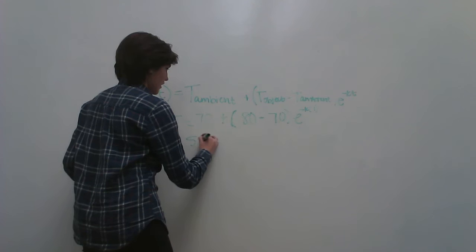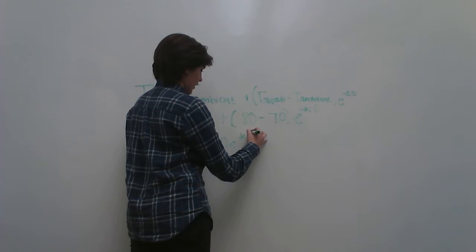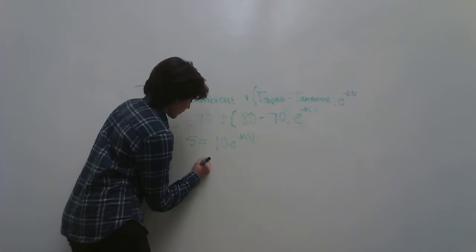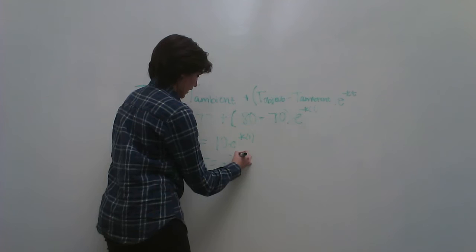Right? So you're going to subtract the 70 and you get 5 equals 10E to the negative k times 1. Then you're going to divide out the 10 and you get 0.5 equals E to the negative k1.